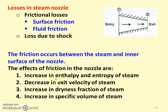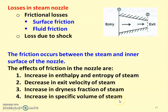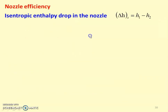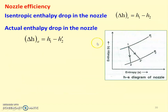The effect of friction in the nozzle is that it increases the enthalpy and entropy of the steam. Because of friction, heat is generated and absorbed by the steam, so enthalpy and entropy at the exit increase. This causes a decrease in exit velocity. There is also an increase in the dryness fraction and specific volume of the steam.